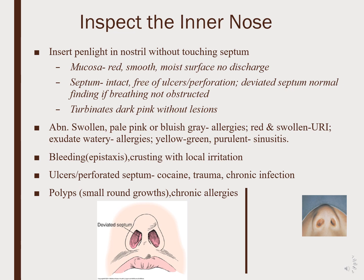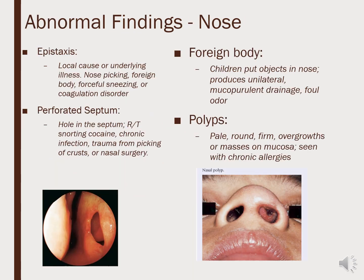Ulcers such as a perforated septum are sometimes related to trauma or inhaled chemicals. Abnormal findings include epistaxis, a perforated septum with an actual hole in the tissue, and polyps or overgrowth of tissue in the nose or sinus spaces.